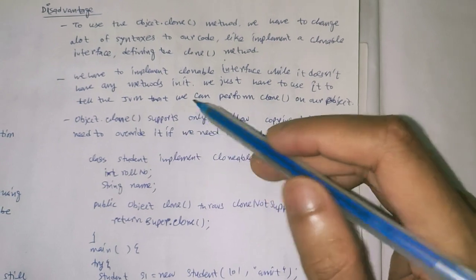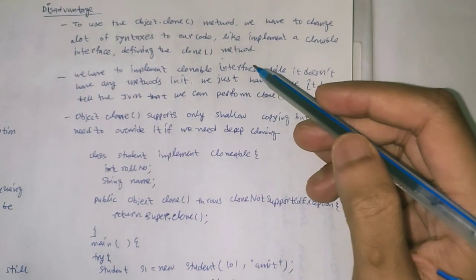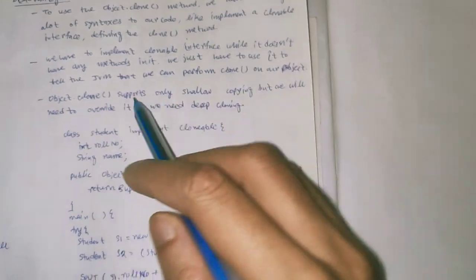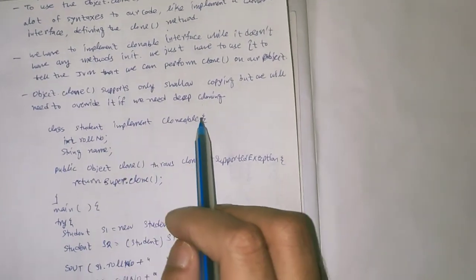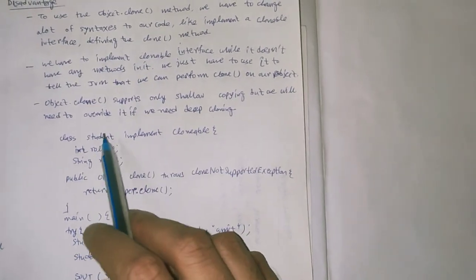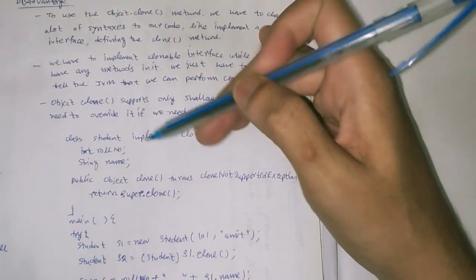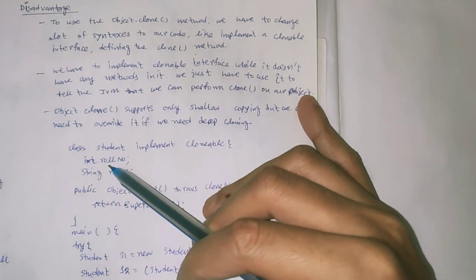There are two types of concept: shallow cloning and deep cloning. This is our example class student implementing clonable. This is the interface. Class name is student with int roll number and string name.